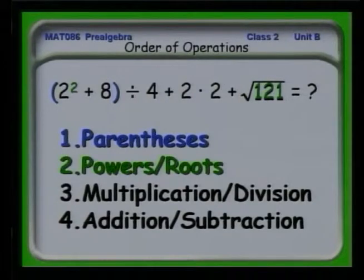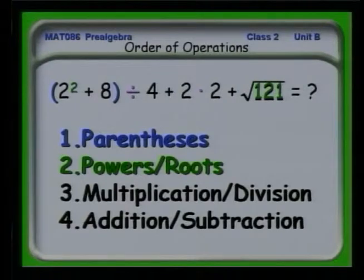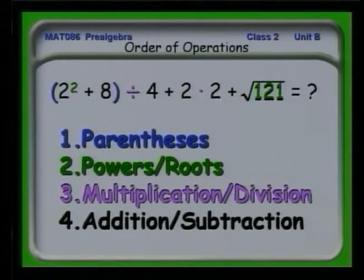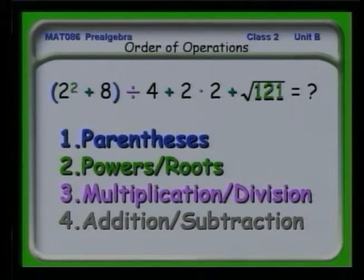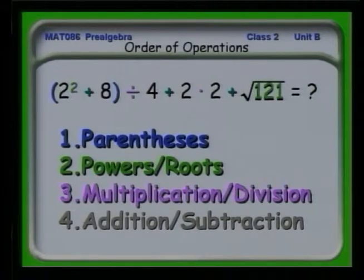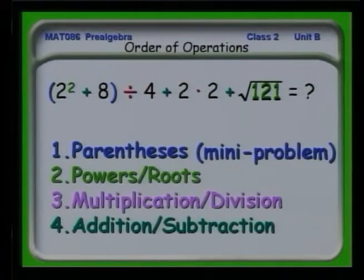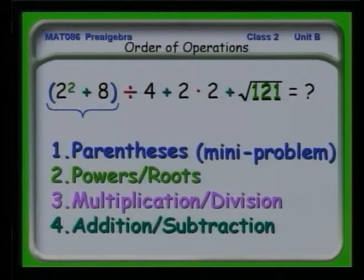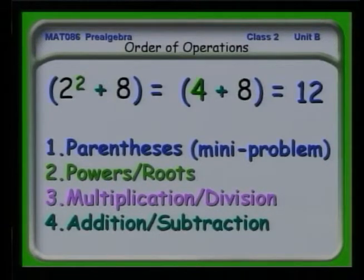Then we need to see where all the multiplications and divisions are. We see we have a division — the quantity 2 squared plus 8 is divided by 4 — and we have a multiplication, 2 times 2. Finally, we have to note any additions and subtractions. Within the brackets we see an addition, and outside we see a couple of addition operations. The first thing we need to do is treat the quantity in parentheses as a mini-problem.